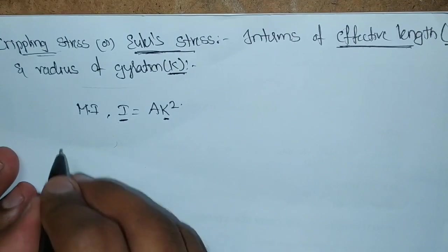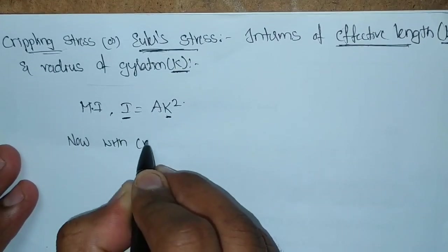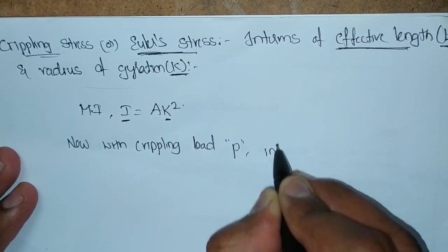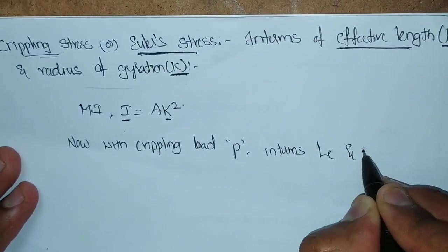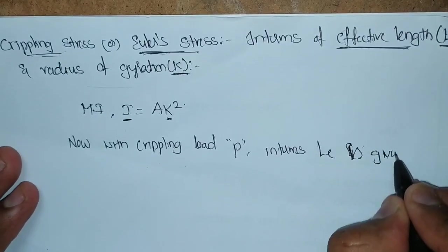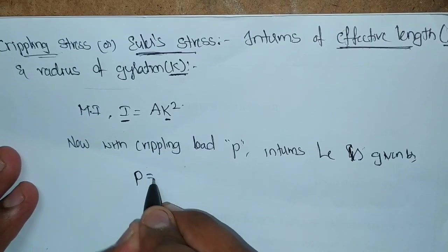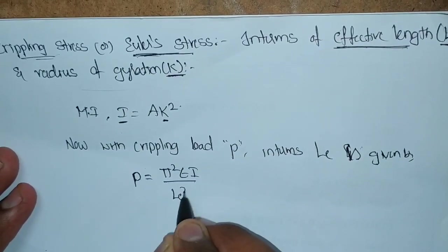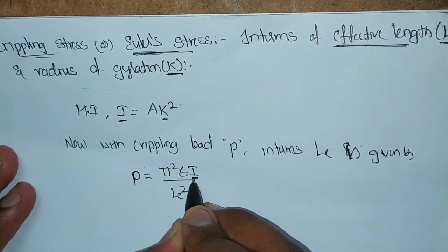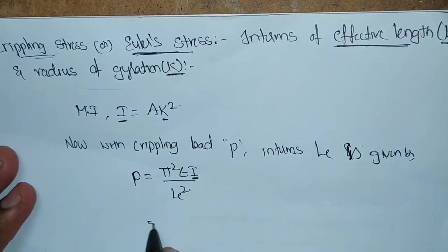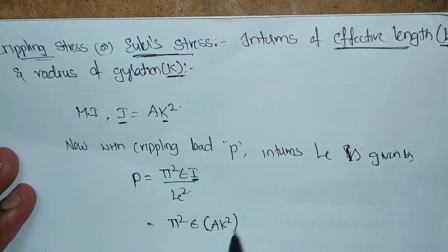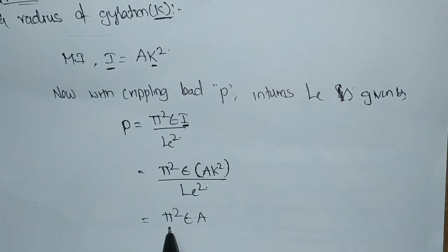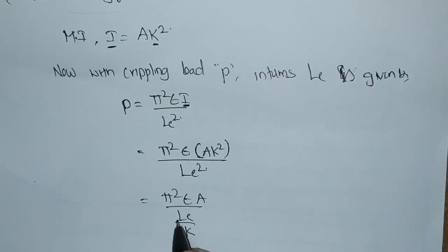Now, with the crippling load, the crippling load is given in terms of effective length LE. For any type of section, the crippling load formula with the effective length is Pi squared EI by LE squared. Here we have the least value of moment of inertia. Substituting I = AK squared, that is equal to Pi squared E AK squared divided by LE squared. Simplifying this equation, it can be written as Pi squared EA divided by (LE/K) whole squared.